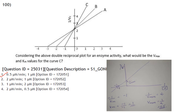On the double reciprocal (Lineweaver-Burk) plot, for curve C: the x-intercept gives −1/Km = −1, so Km = 1; the y-intercept gives 1/Vmax = 2, so Vmax = 0.5. Answer is option 1: Vmax = 0.5 and Km = 1.